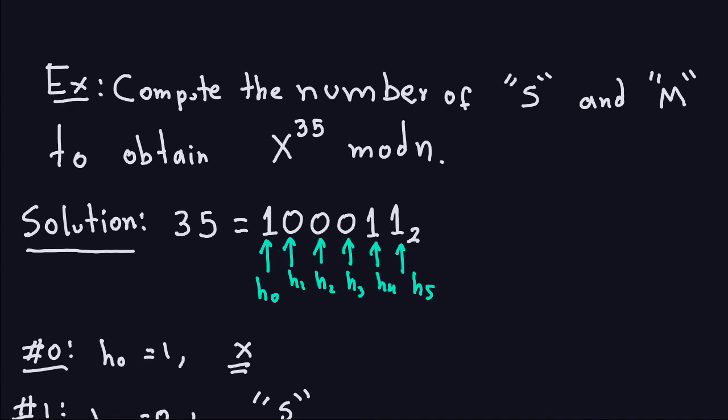Hello and welcome again. This is a continuation of a series of videos where we are talking about modular exponentiation or fast modular exponentiation. As I promised in the last video, I will give you another example and I will explain the pseudocode that is the implementation of this algorithm, called the square-and-multiply algorithm.